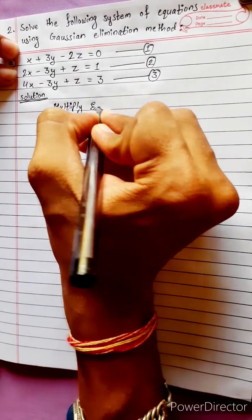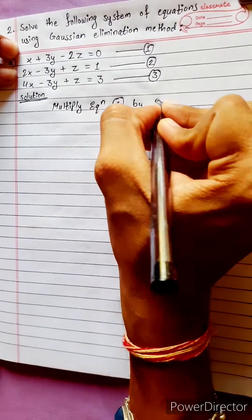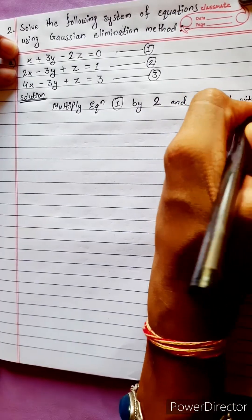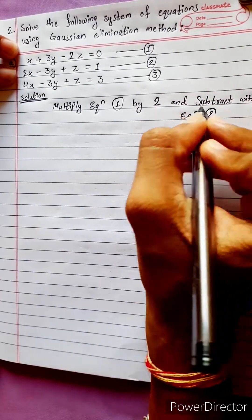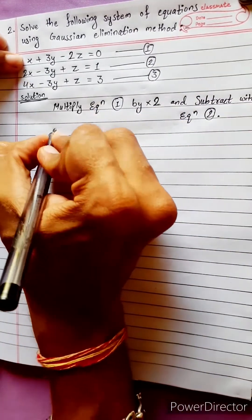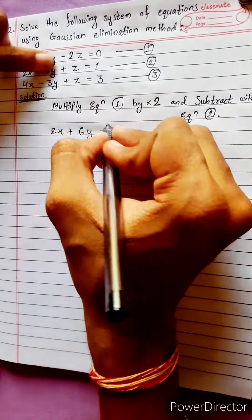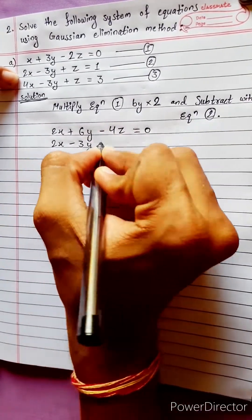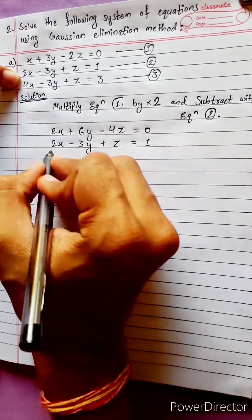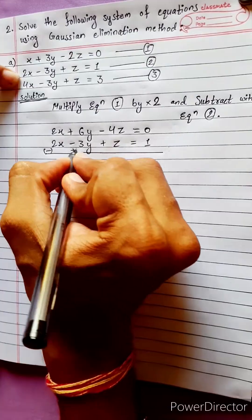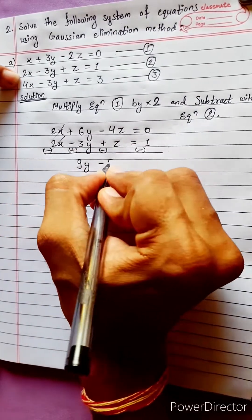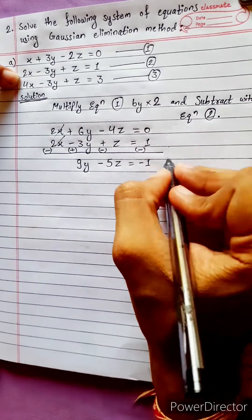Solving equations 1 and 2. Multiply equation 1 by 2 and subtract with equation 2. We get: 2x + 3(2y) - 2(2z) = 0 into 2, which is 0. Subtract equation 2: 2x - 3y + z = 1. After sign change, 6 plus 3 gives us 9y - 5z = -1. Let's consider this equation 4.